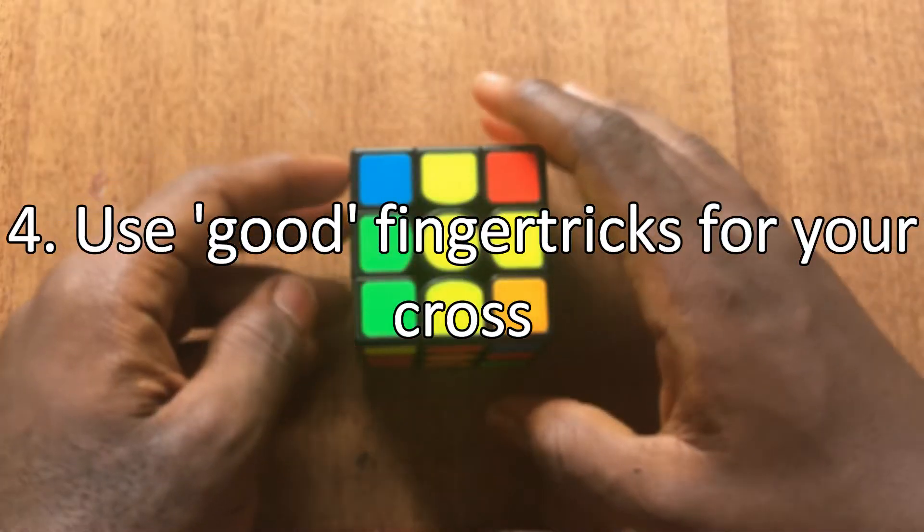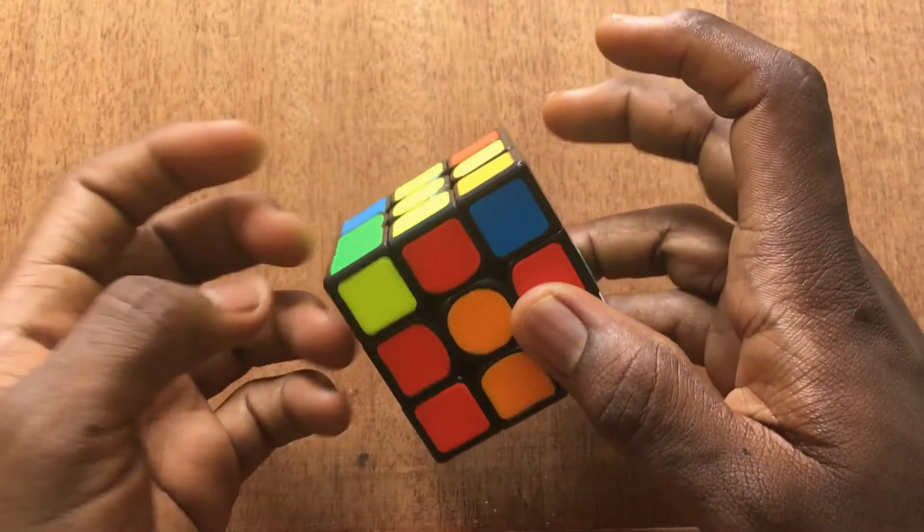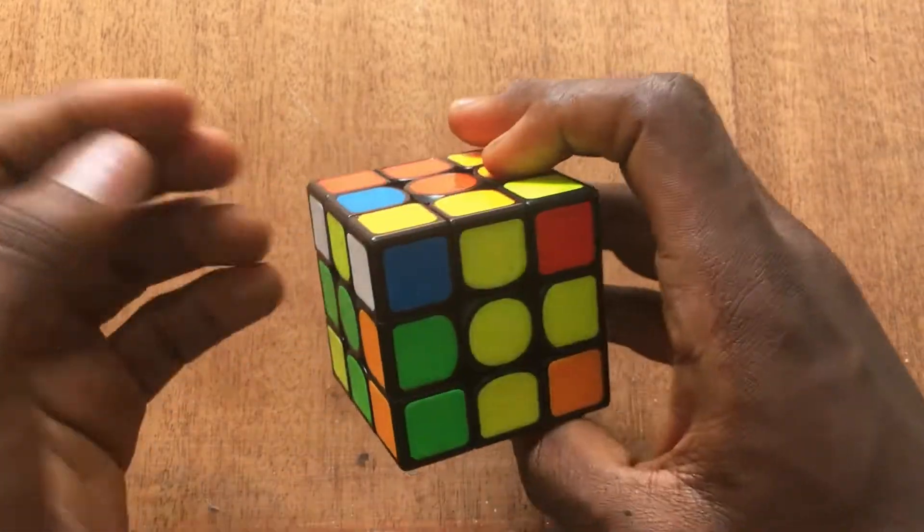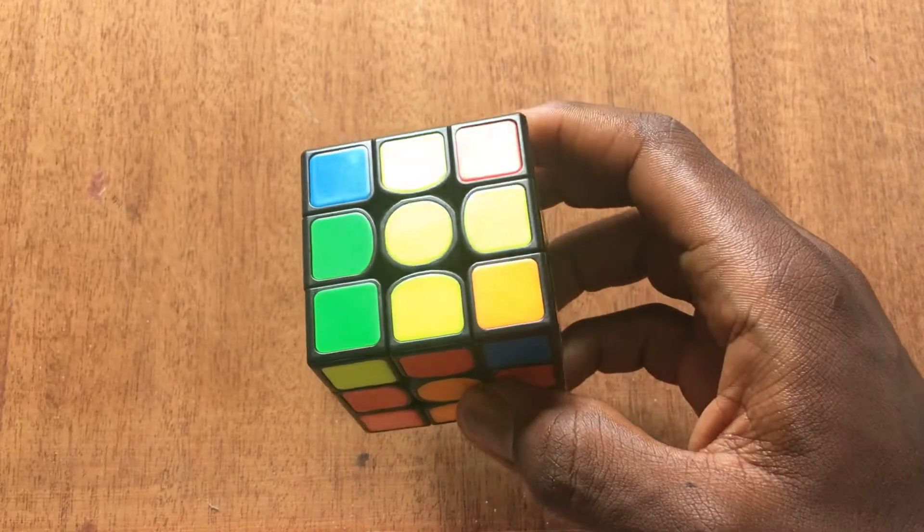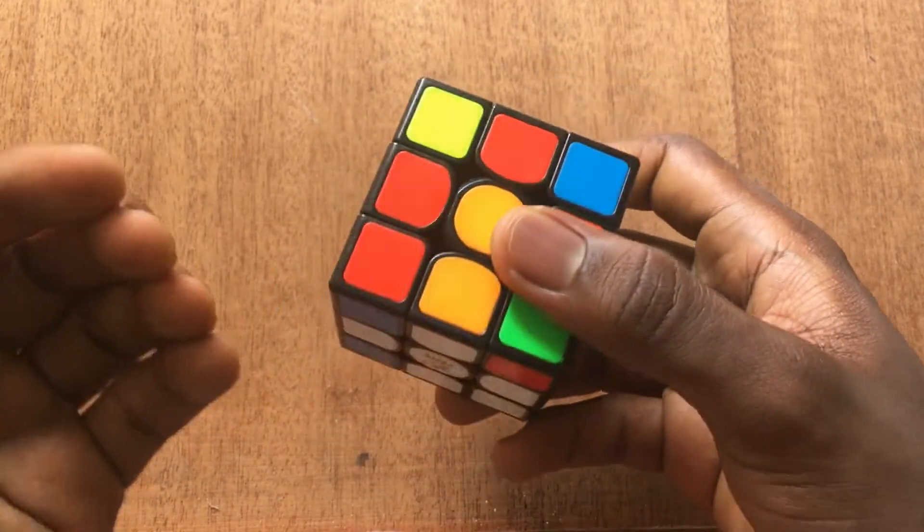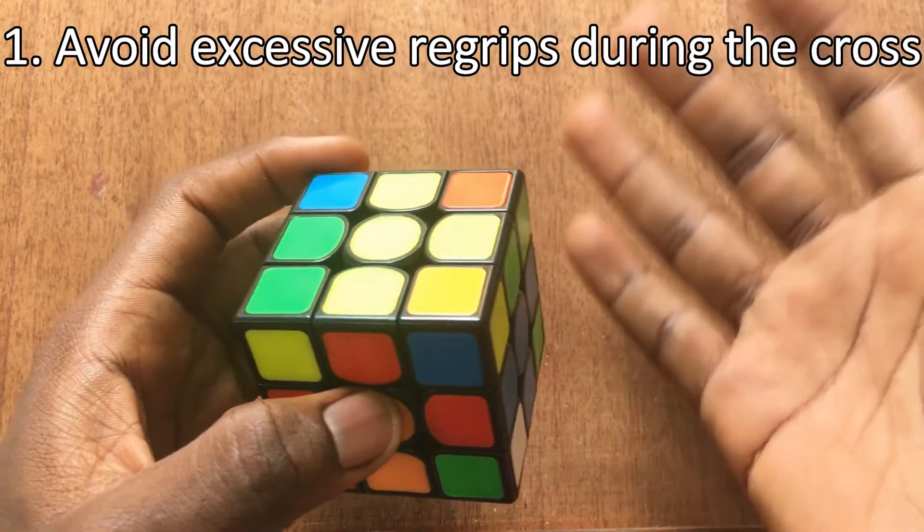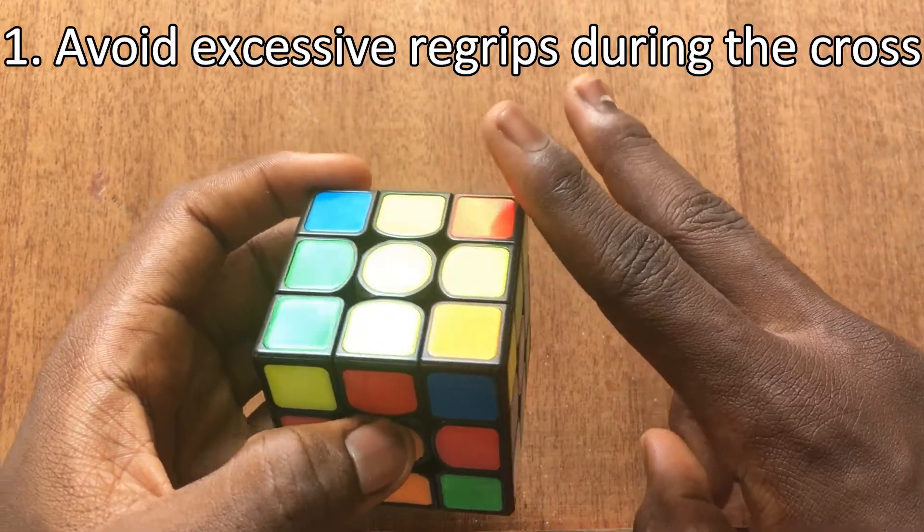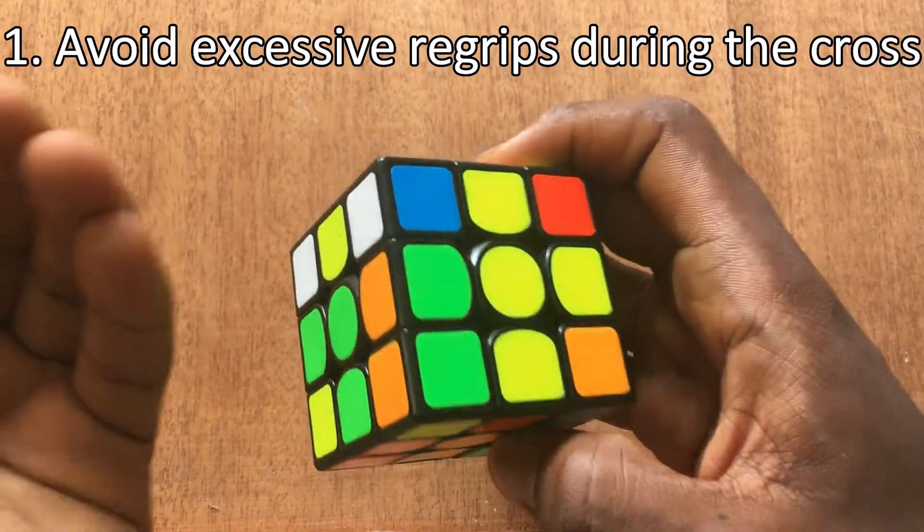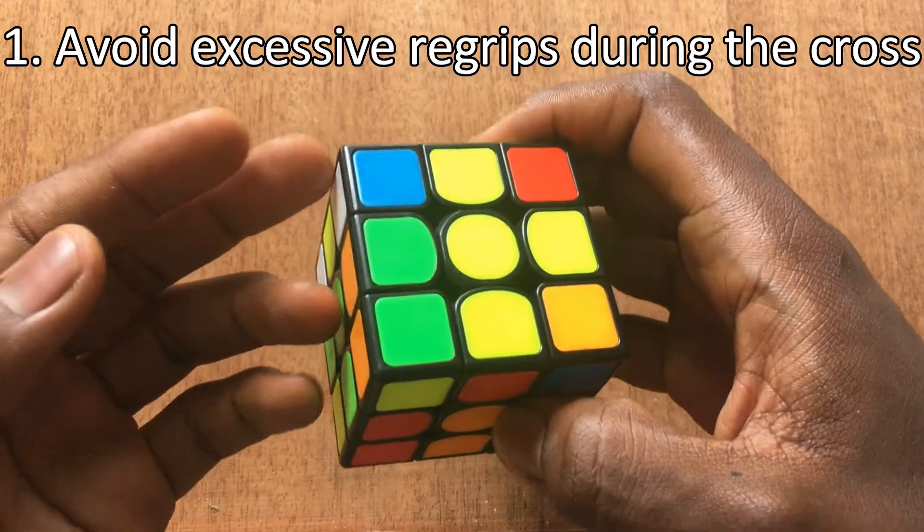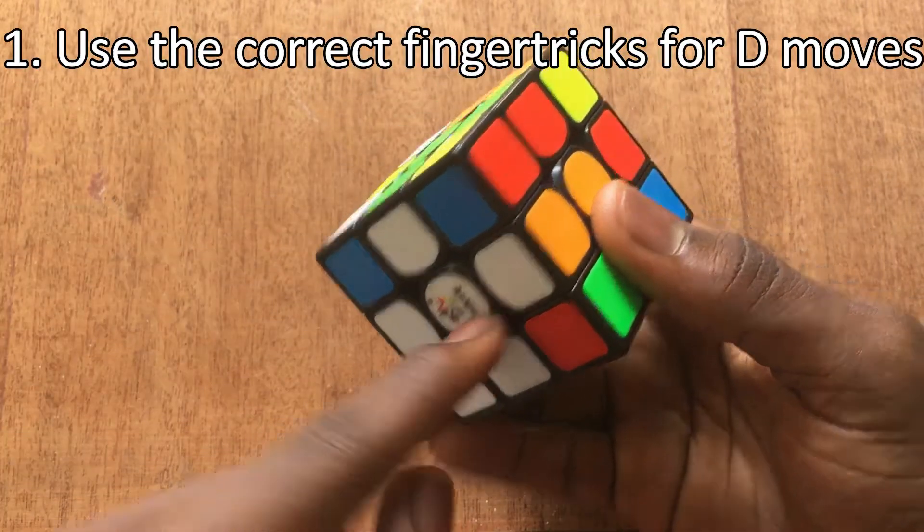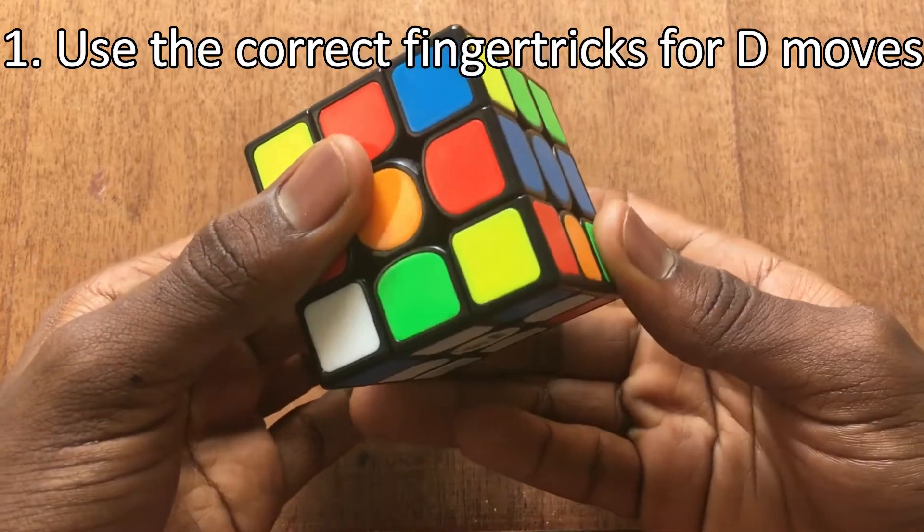Tip number 4: use good finger tricks. Good is subjective because what is good for one person might not be good for another person, but there are some basic concepts that are generally regarded as good for everybody. Now using good finger tricks makes the cross more fast and more fluid. As a rule of thumb, we should not have more than two re-grips in one cross solution so we should not be re-gripping all over the place. We should just try to keep it to 2 or maximum 3 in some cases.